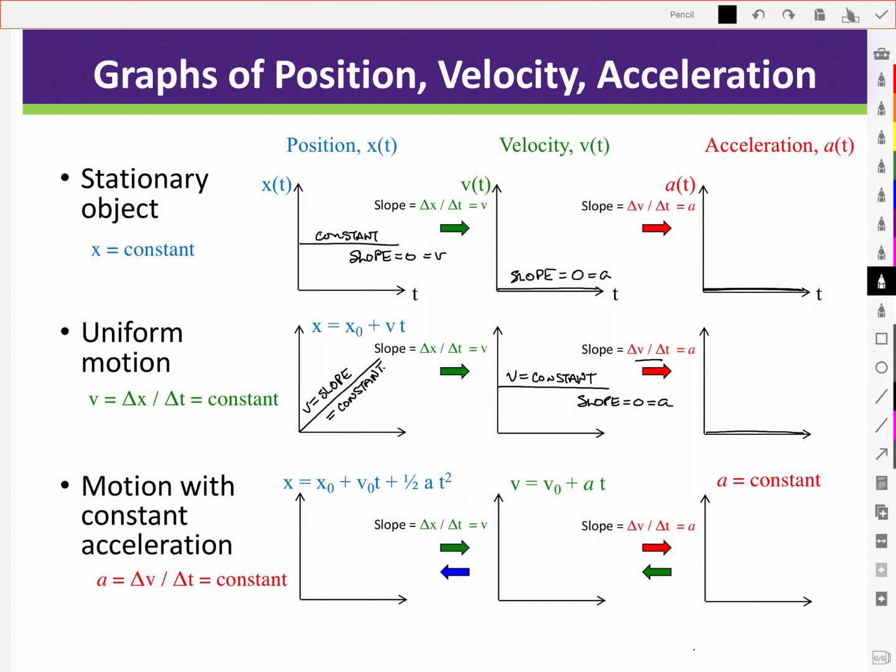Lastly, we look at motion with constant acceleration. Constant acceleration means a constant change in the velocity. This means a straight line for the velocity time graph, with a constant positive slope here reflecting the constant positive acceleration.